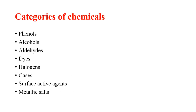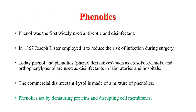There are a few categories of chemicals which can be used for sterilization and disinfection purposes. These include phenols, alcohols, aldehydes, dyes, halogens, gases, surface activations, metallic salts, and so on. We will discuss a few of them in a minute.